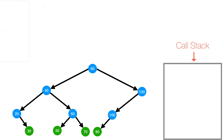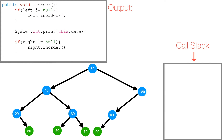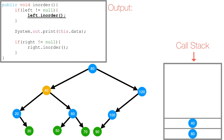Now let's look at in-order traversal. In in-order traversal, think of in-between — we visit the left, then the root, and then the right. When we call in-order on our root node, 80 gets pushed to the call stack. The first thing we do is check if 80's left is not null — it's not — so we call in-order on 80's left subtree. 40 gets pushed to the call stack, and we're back to the start of our method.